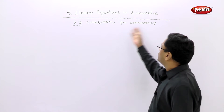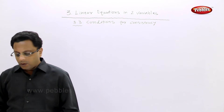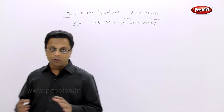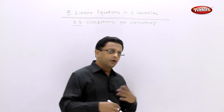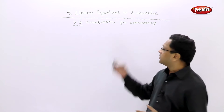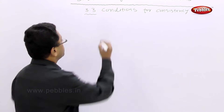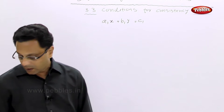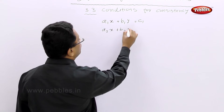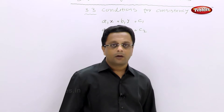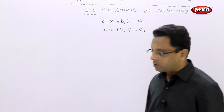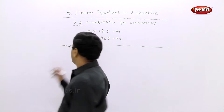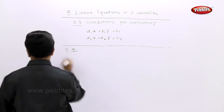Let us see 3.3 conditions for consistency. An equation is said to be consistent if it has a solution, and inconsistent if it doesn't have any solution. But without actually solving it, how do we find the consistency? If we consider two simultaneous equations like a1x + b1y = c1 and a2x + b2y = c2, let us write the conditions in tabular form.